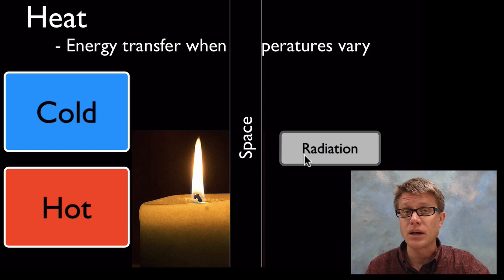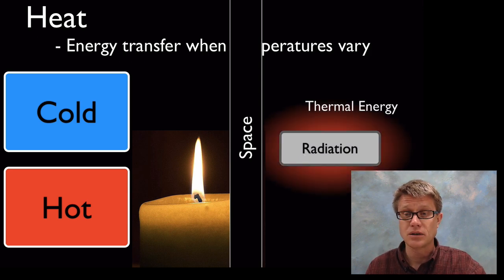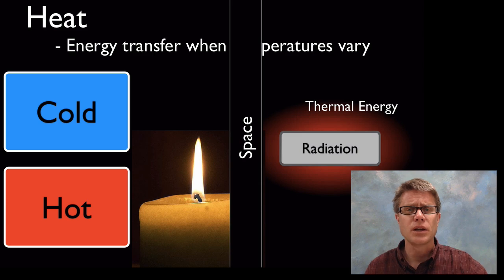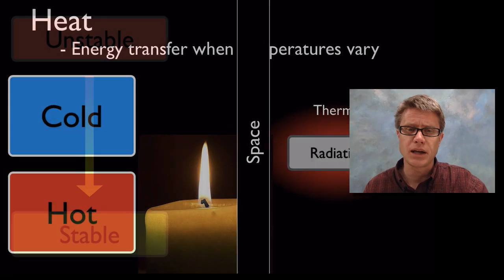One important thing about radiation is once an object picks up that radiation it can give off heat in the form of thermal energy as well. The heat that we have on our planet was delivered in radiation from the sun, but then it creates heat on our planet.